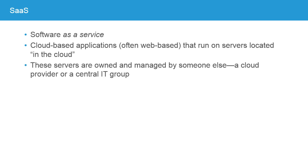When it comes to what's being offered as a service, there are a number of acronyms. The first is SaaS, or Software as a Service. This is the idea of cloud-based applications — usually web-based applications — that run on servers located in the cloud. These servers are owned and managed by someone else: a cloud provider in the case of a public cloud, or a central IT group in the case of a private cloud. Examples include web-based mail services like Hotmail or Gmail, which are software running in a web-based cloud environment.